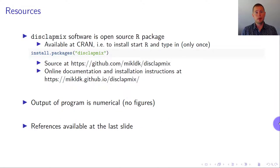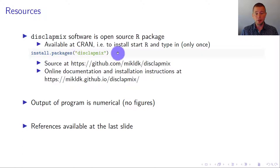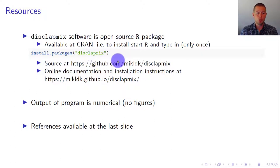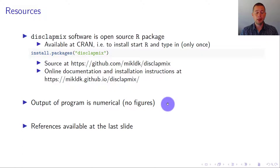The software used to compute the discrete Laplace method is available in the disklab mix R package, available on CRAN, meaning you can install it using the R command shown here. You only need to install it once. The source code is available on GitHub at the link shown, and there's also online documentation and installation instructions available. Please notice that the output of the program is numerical — the figures shown today use external functions I wrote, which are not the main focus of this talk.